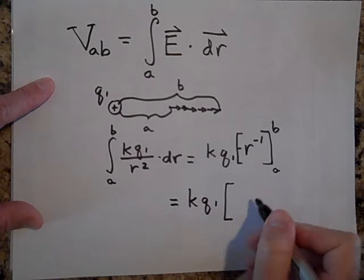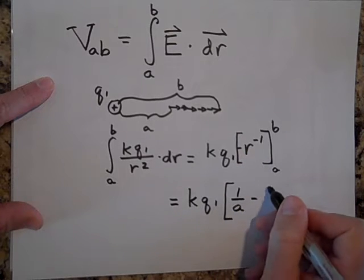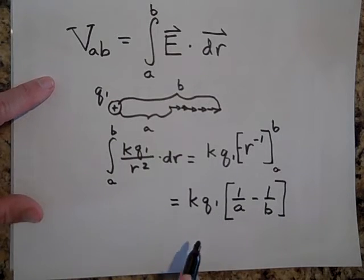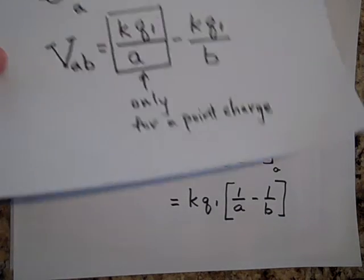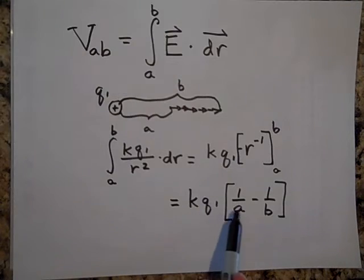And so it's going to be k q1, and then, I'll put that in first and get rid of the negative. So it's 1 over A minus 1 over B. Hey, that's just like what we got before. That's the same thing as this. So we found that two different ways.